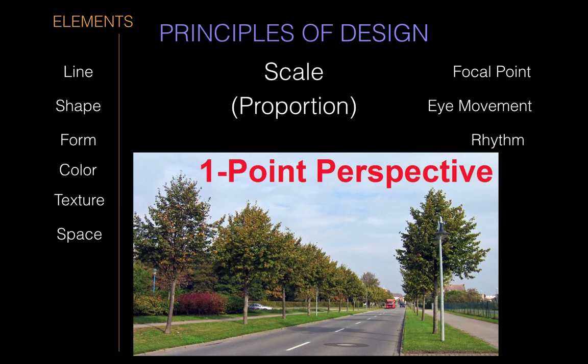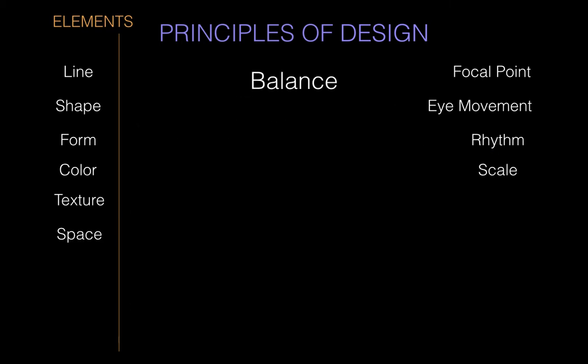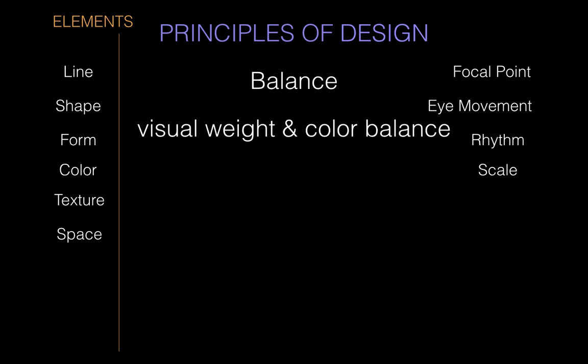Two-point and three-point perspective are the same exact principle. With two-point, perhaps you're seeing the corner of an object — one side disappears toward a vanishing point on the left and the other side toward a vanishing point on the right. With three-point, maybe you're also looking up at a tall skyscraper that seems to recede smaller into the sky, so you have one point to the left, one to the right, one up in the sky. These are all variations of the same principle. Speaking of principles — balance. Balance has to do with both visual weight and color balance: does this look too heavy on one side or another, and does it look too colorful in one direction?